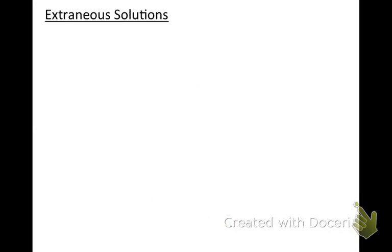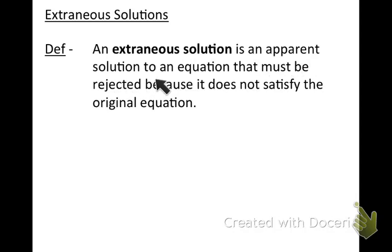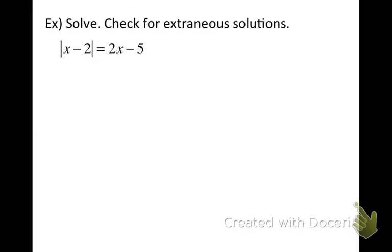There's one more matter to attend to before we look at examples. Whenever we're working with variables on both sides of the equation, we run into a situation where there are what are called extraneous solutions. An extraneous solution is an apparent solution to an equation that must be rejected because it does not satisfy the original equation. In the next example, you're going to see where a solution is extraneous and why.